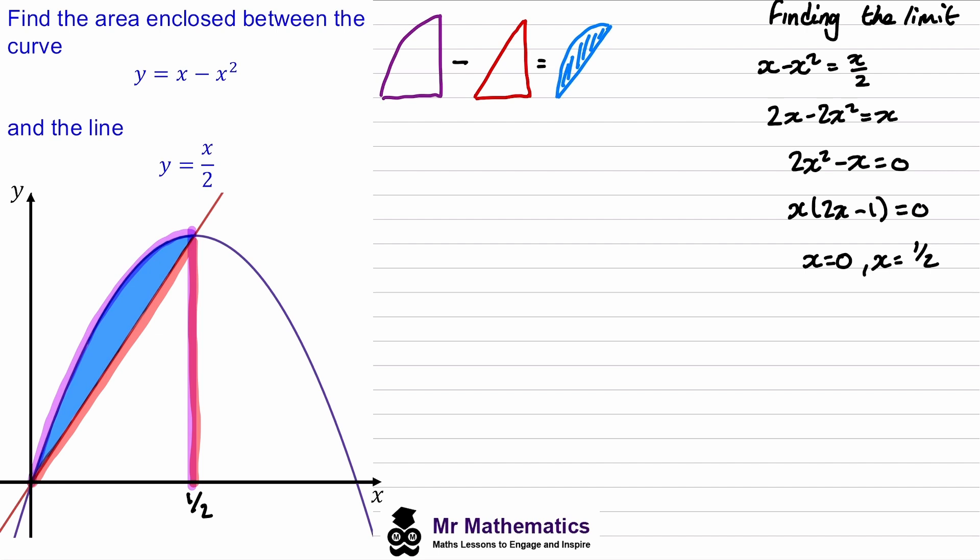Now we've got the limits we can find the area of each of these two shapes. The purple region will be between 0 and a half, and then we'll subtract from that the integral between the same limits of this red region which is x over 2.